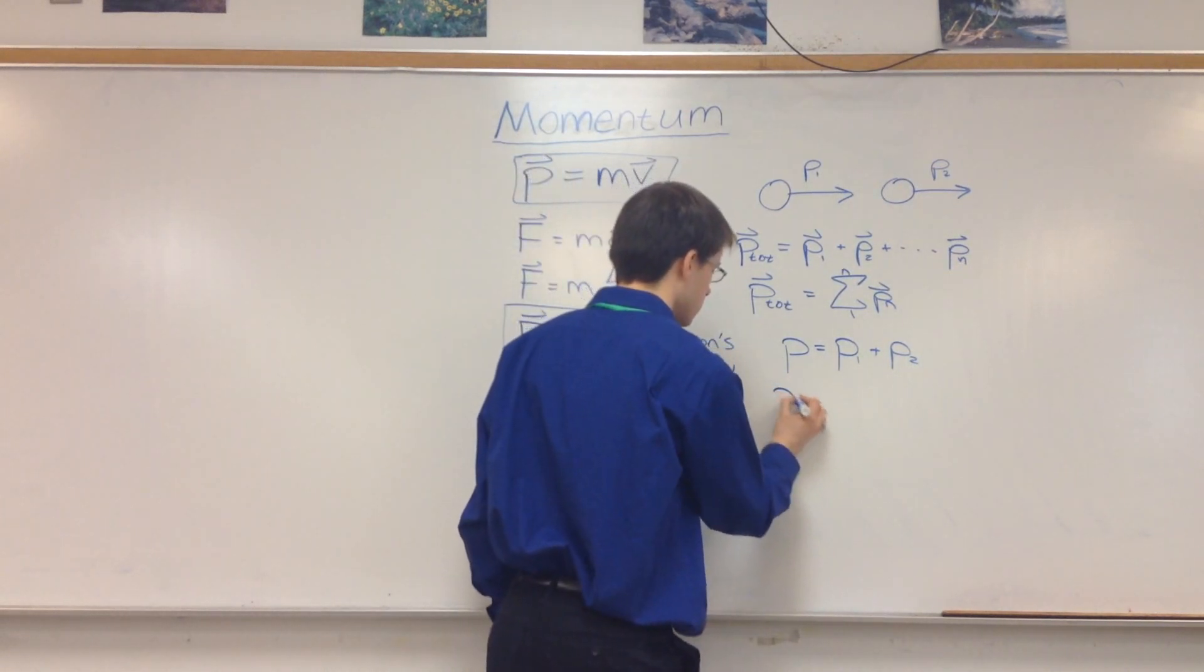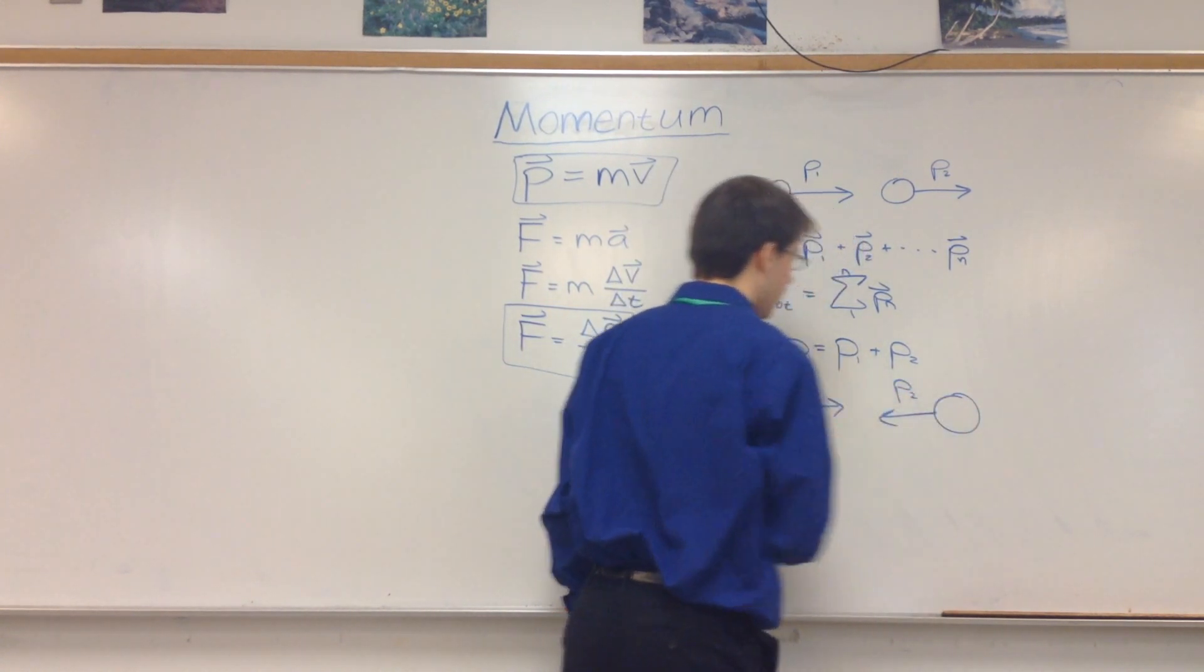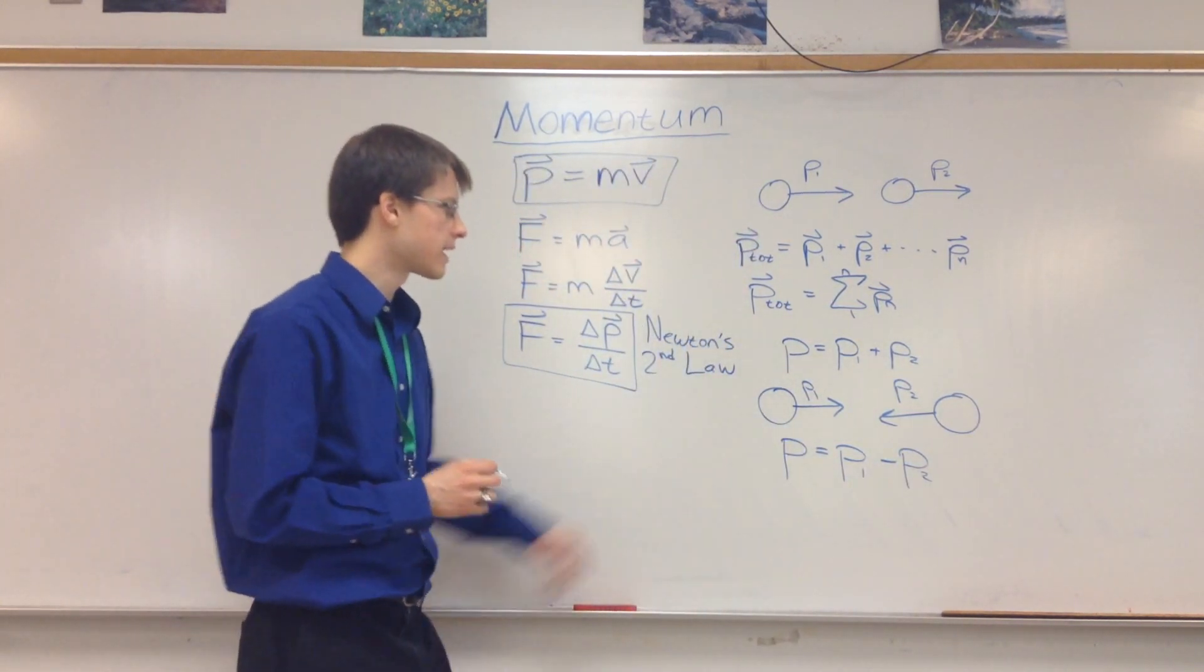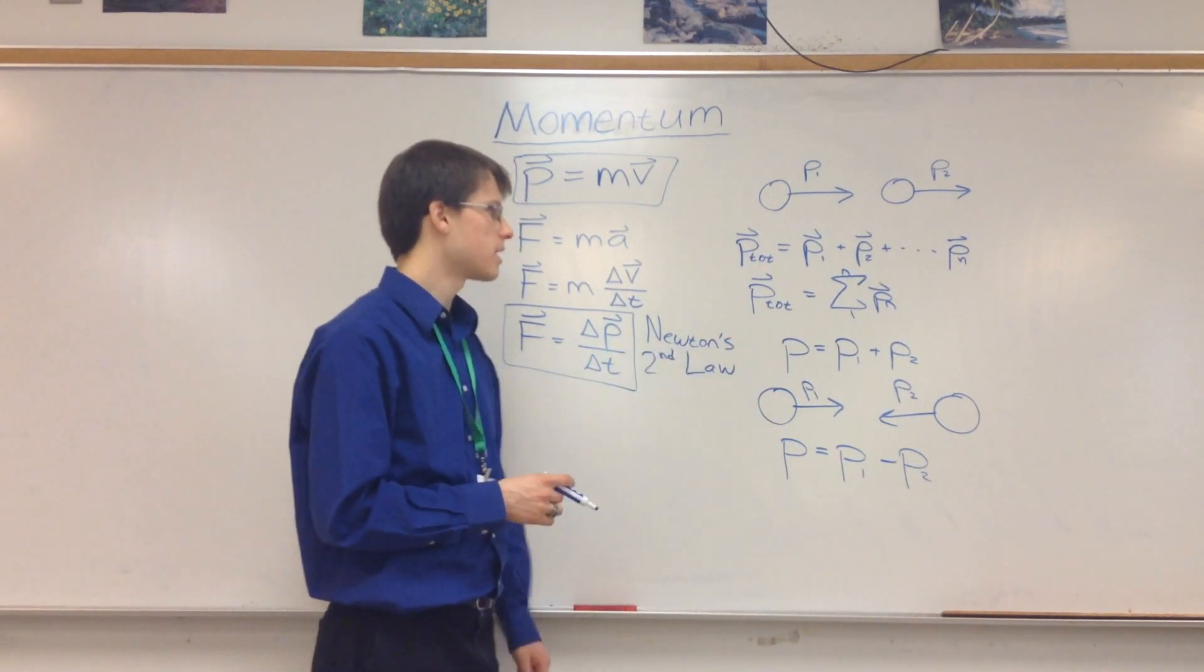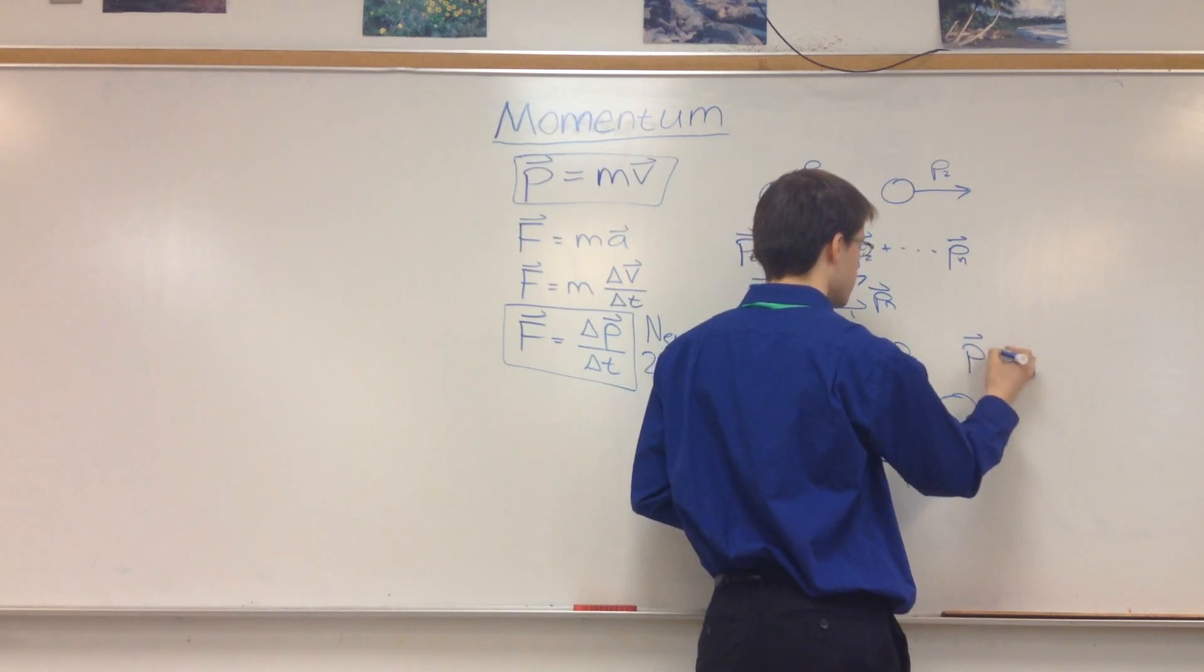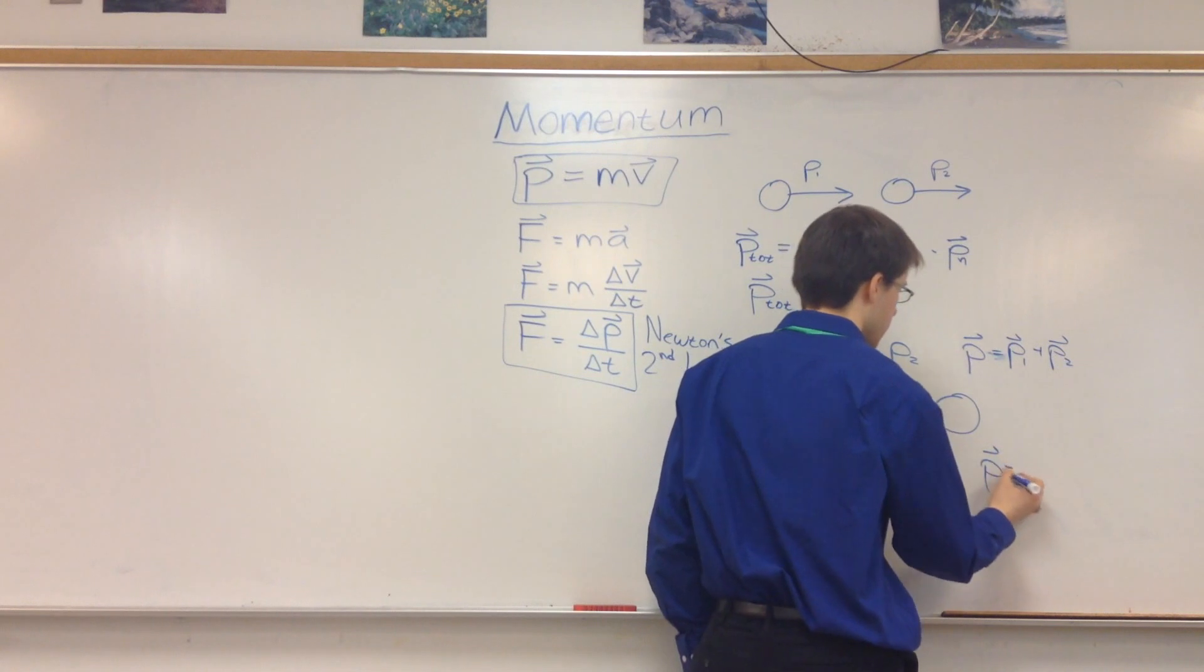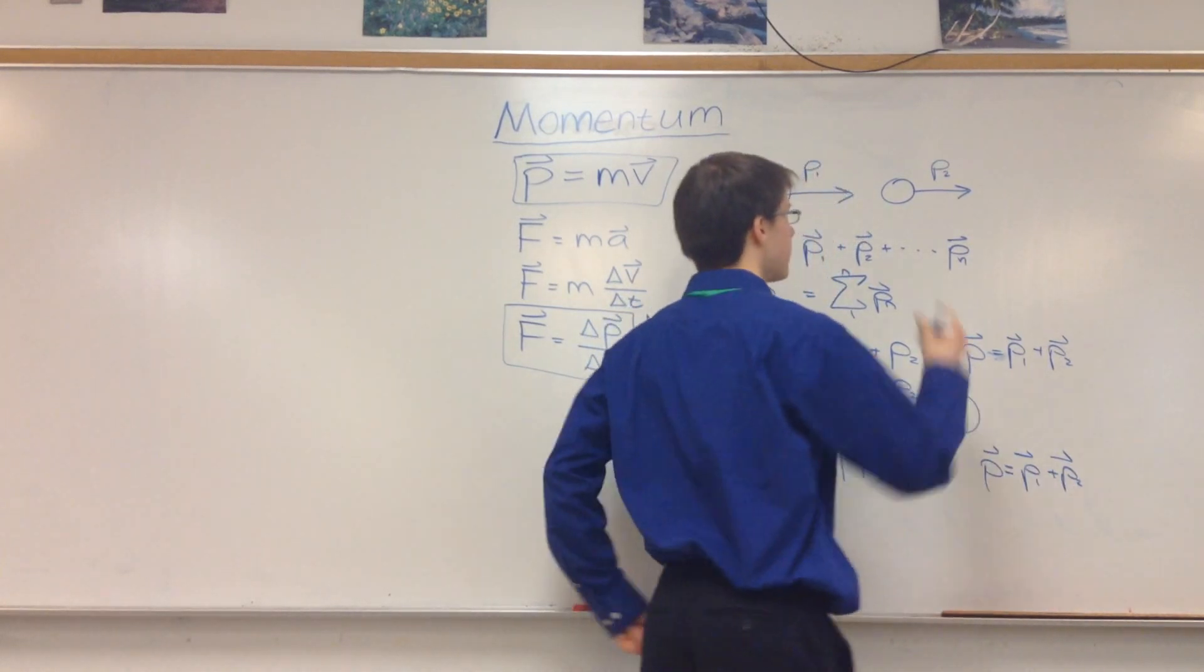We can see that better if we do something like this, where we have P1 to the right, we have another object which has P2 to the left. The momentum of this system is going to be P1 minus P2. Right? And again, these are the magnitudes of the total momentum. Because really, right, this would be, if we wrote this in vector form, we'd have just P is equal to P1 plus P2. And here we'd also have P is equal to P1 plus P2. However, we look at this vector, right, the vector P2,